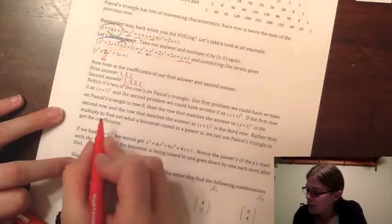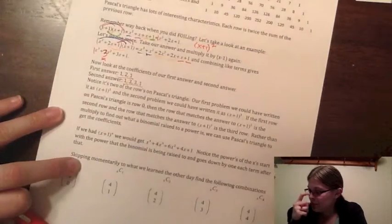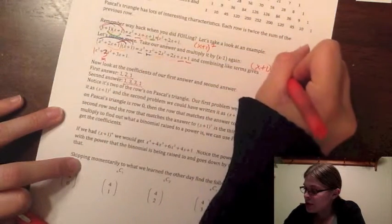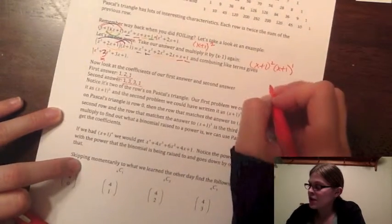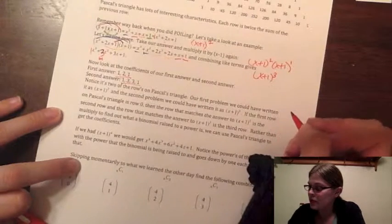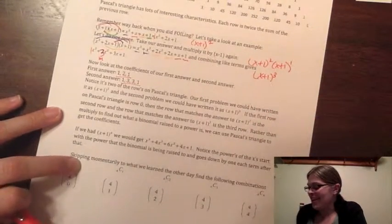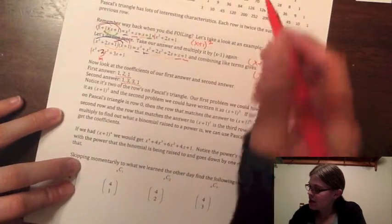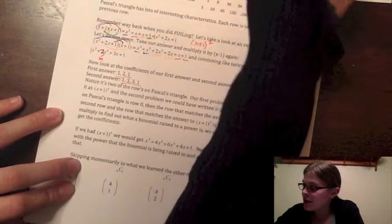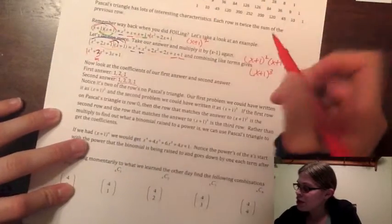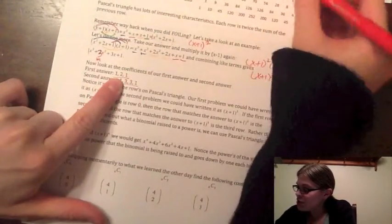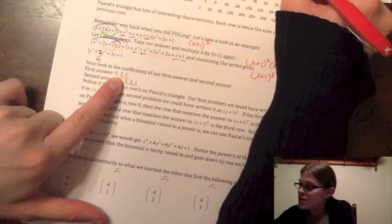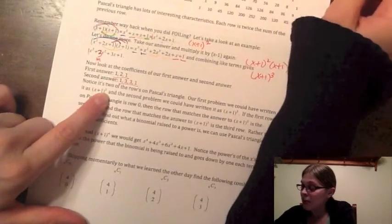Notice that we could have written our first problem as x plus one quantity squared, and then this problem — since this is really x plus one squared times x plus one again — you can add the exponents and get x plus one quantity cubed. So the rows, starting counting at zero, then one, then row two, then row three: row two matches our answer for x plus one squared, and row three matches x plus one cubed. The number of the row matches the degree, or the power, or the exponent of our binomial term.